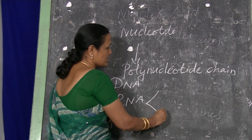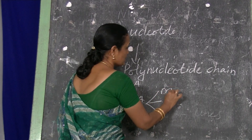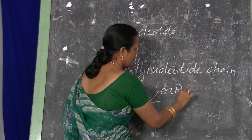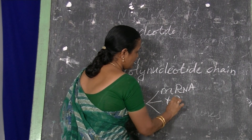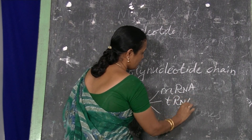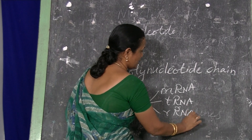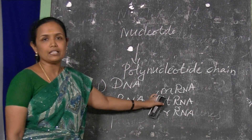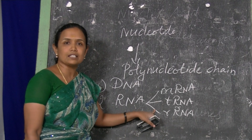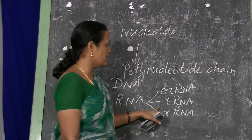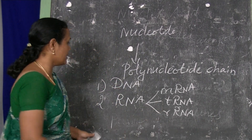RNA is further classified into three types: mRNA, tRNA, and rRNA. mRNA is messenger RNA, tRNA is transfer RNA, and rRNA is ribosomal RNA.